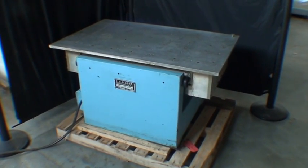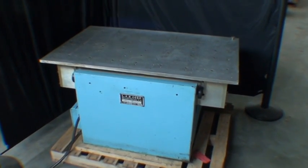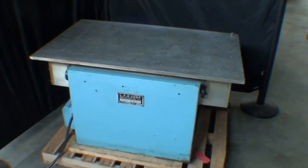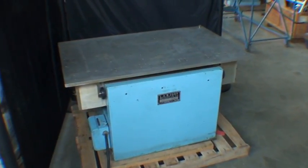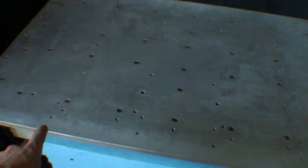All right, here we have a LAB equipment brand mechanical vibration testing machine. This is a vibration machine that uses eccentric weights that are located under the table surface here, a pair of them.